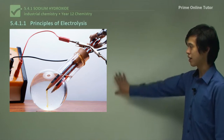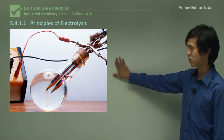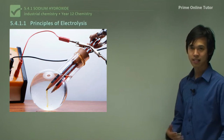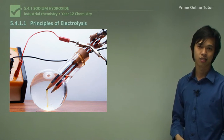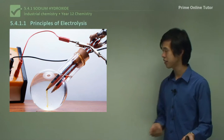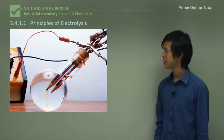Here we have a nice electrolytic cell using pencils as electrodes because they're full of graphite — just a cool little application of electrolysis.